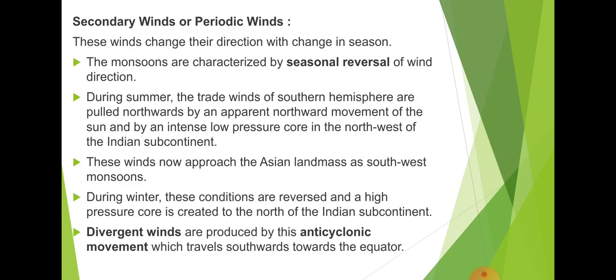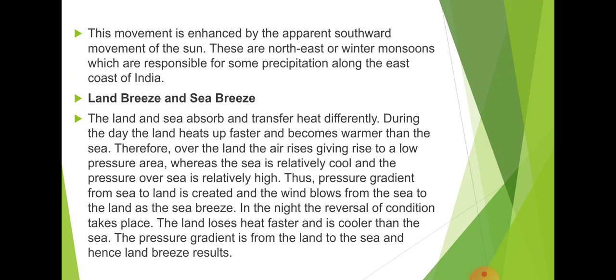The divergent winds are produced by the anti-cyclonic movement, which travels southward toward the equator. During this time, the divergent winds produce anti-cyclonic movement traveling from southward toward the equator, toward the southern hemisphere. This movement enhances the apparent southward movement of the sun. These are the northeast winter monsoon winds, responsible for some precipitation along the east coast of India, as sun rays reach directly to the southern hemisphere, creating movement from low pressure to high pressure, producing rainfall in the coastal regions of India.